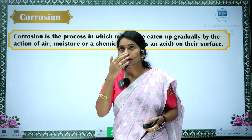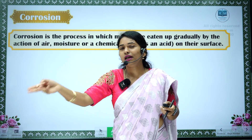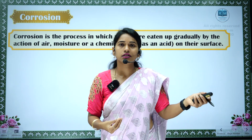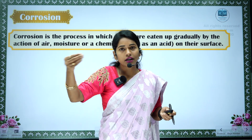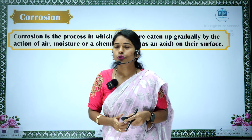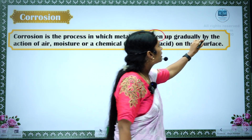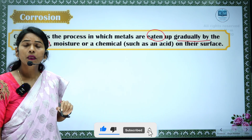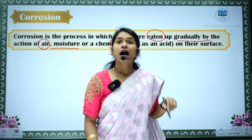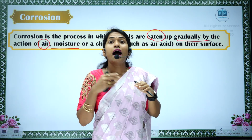Metals undergo oxidation. If you observe buildings, during construction some iron materials will be left there. If you leave that iron object for a longer time, this iron comes in contact with the air and moisture and it forms rust. That phenomenon we call as corrosion. Corrosion is a process in which metals are eaten up gradually by the action of air — oxygen may react, and moisture or any other chemicals present — and these metals undergo corrosion.